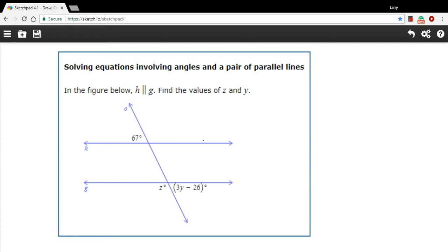In this problem, we're being told that H and G are parallel lines, and they're cut by a third line, something we call a transversal.